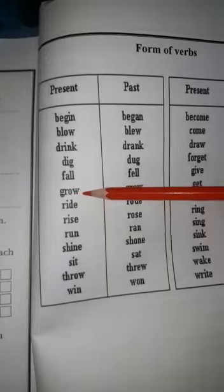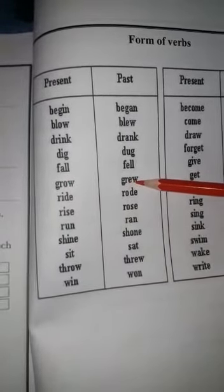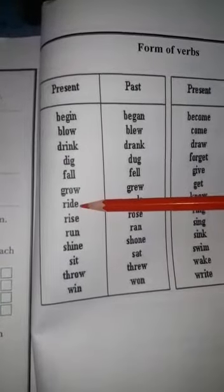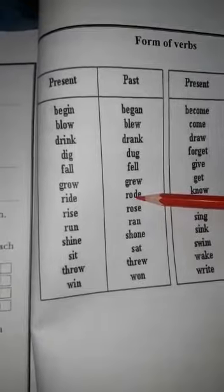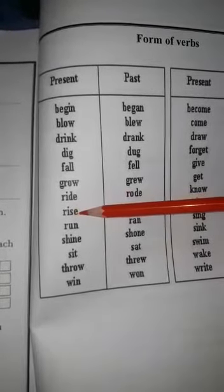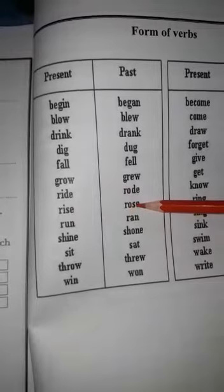Us ke baad hai G-R-O-W, grow. Grow ki second form kya hai: G-R-E-W, grew. Next hai R-I-D-E, ride. Ride ki second form kya hai: R-O-D-E, rode. Us ke baad hai R-I-S-E, rise. Rise ki second form kya hai: R-O-S-E, rose.